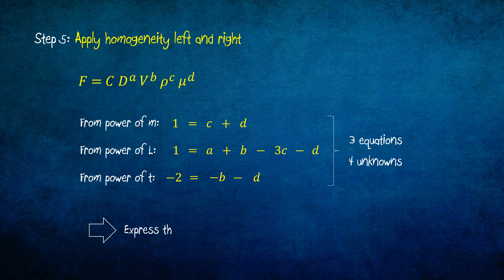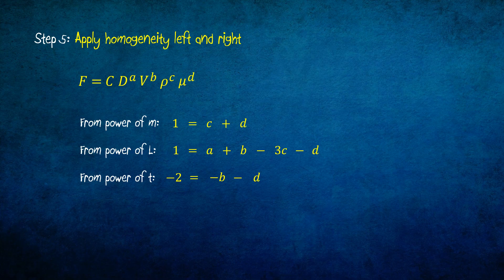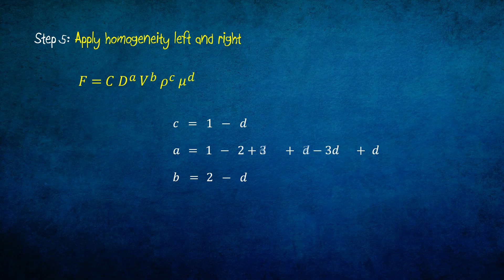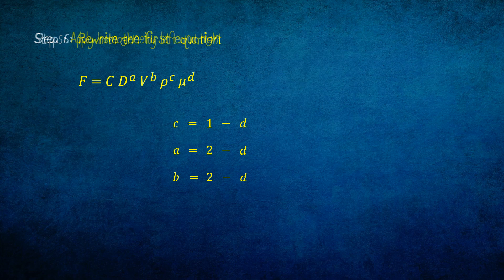We are going to express three of the unknowns in terms of the fourth. Let's express A, B, and C in terms of D. Step 6 consists of rewriting the first equation — which is the drag force equation — by replacing the powers with the ones we have obtained previously.